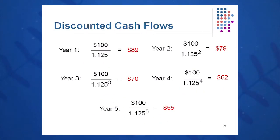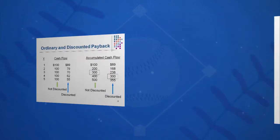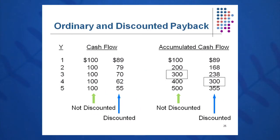This is similar to the regular payback method — we can see we pay her back in three years very quickly. But if we discount each of those cash flows, we know it's going to take a little bit longer. The first $100 is worth $89, the second $100 is worth $79, the third is worth $70, the fourth is worth $62, and the fifth is worth $55. From the chart, regular payback is three years, but discounted payback takes four years to recapture the $300. It takes a little bit longer.